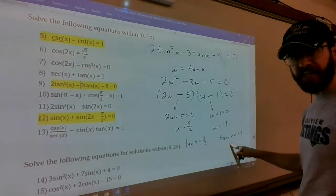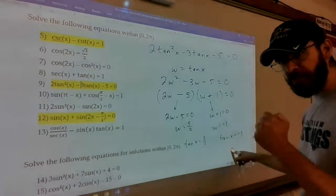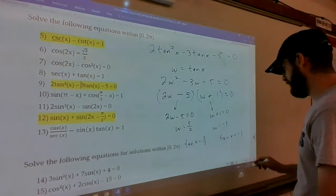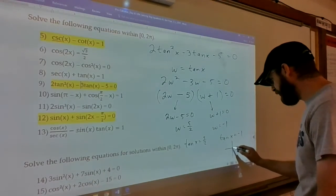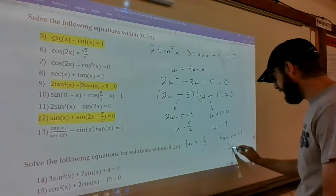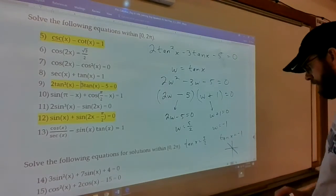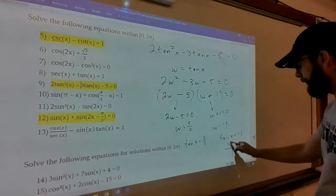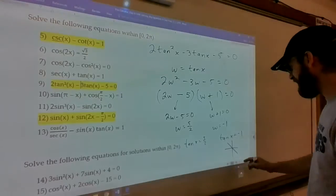Now, if you recall with -1, that was a value on the unit circle for sure. It ended up being the 45 degree angles in quadrant 2 and quadrant 4. So, that would be 3π/4 and 7π/4.